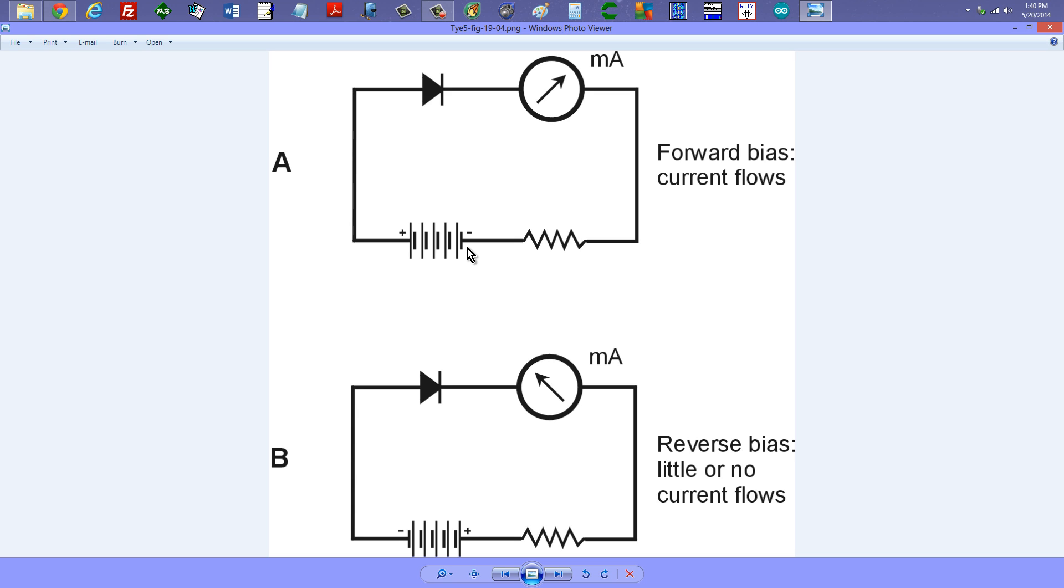Remember, electrons carry a negative charge, so electrons will flow like this. And they can flow easily through this diode from the cathode to the anode, so that we will see current in a milliammeter. That's what this mA stands for. We can actually build a circuit like this and test diodes to be sure that they are working properly. We should get current under these conditions when electrons are flowing from cathode to anode, and we call that forward bias.